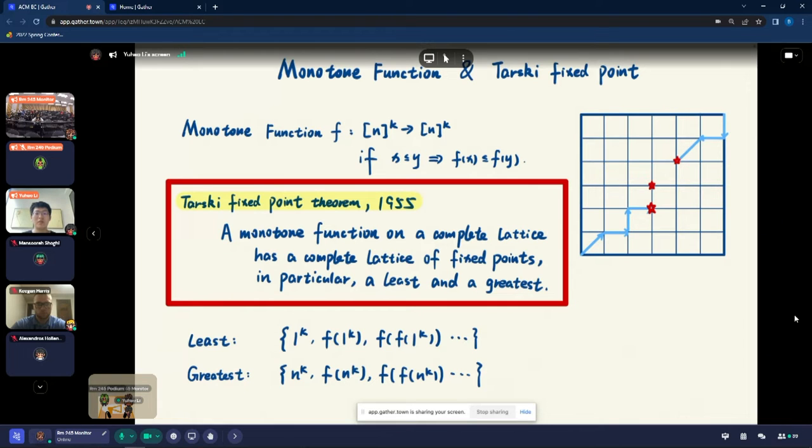Let's define the monotone function over this complete lattice. As the name suggests, a monotone function F is that for every two points X and Y, if X and Y are comparable, then this function can preserve this order.